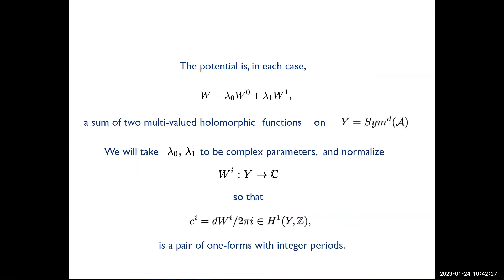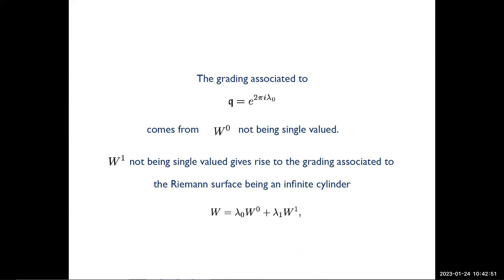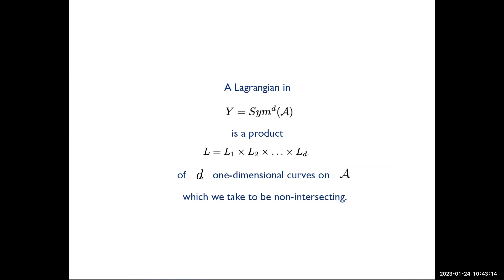The potential in each case is a sum of two multi-valued holomorphic functions, W0 and W1. We'll take these lambdas to be fixed complex parameters, and normalize W so that dW is a pair of one-forms with integer periods. The grading associated to q of the quantum group will come in our conventions from W0 being not single-valued. W1 not being single-valued is associated to the grading from the Riemann surface being a cylinder. A Lagrangian in the symmetric product is a product of D one-dimensional curves on the Riemann surface, which we take to be non-intersecting.